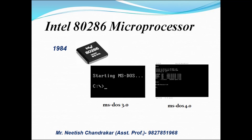इसको Disk Operating System नाम इसलिए दिया गया क्योंकि यह ज़्यादातर जो काम करता था वो Disk से Related ही होते थे। इसमें जितने भी Directories हों, किसी File को Copy करना हो, Folder Copy करना हो, उसको Delete करना हो, या उसको Read या Write करने की बात आए — इस तरह के जितने भी काम थे, सब Disk से Related थे।